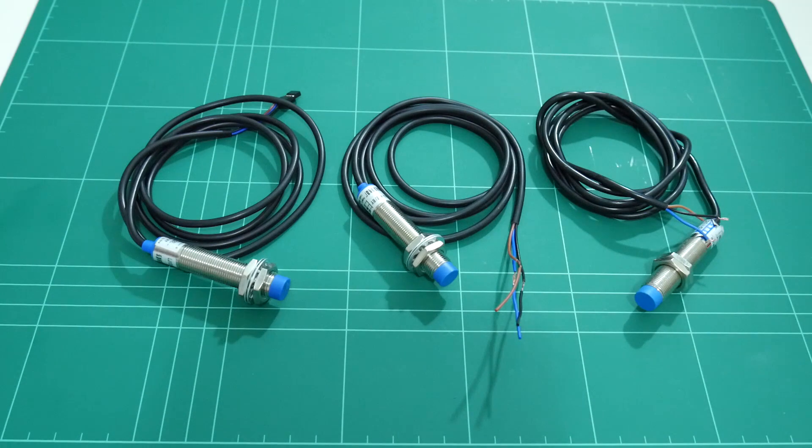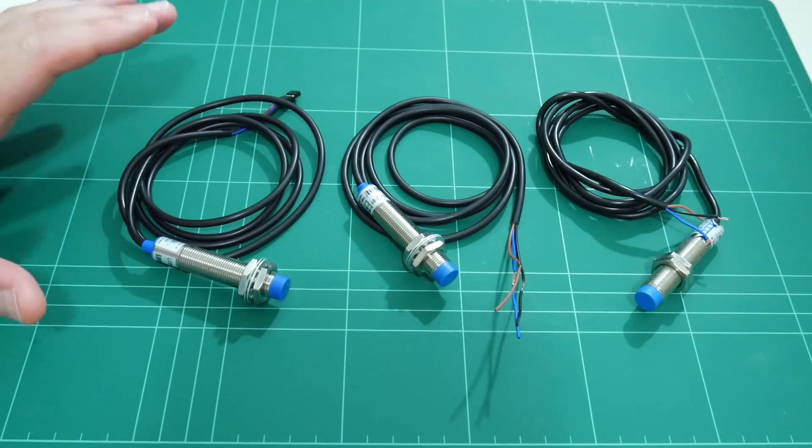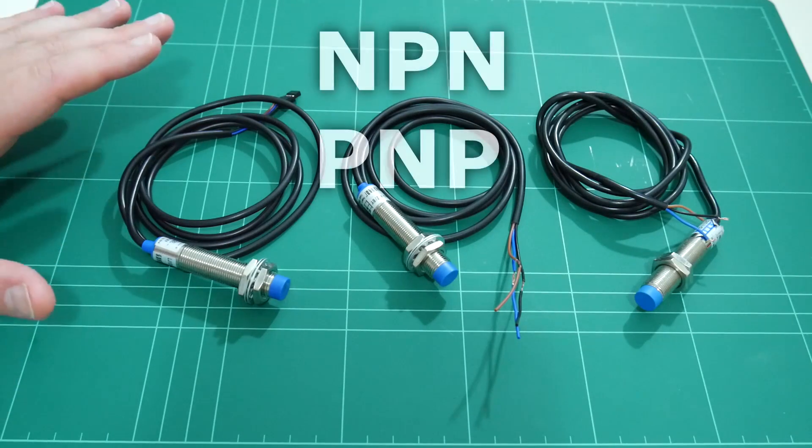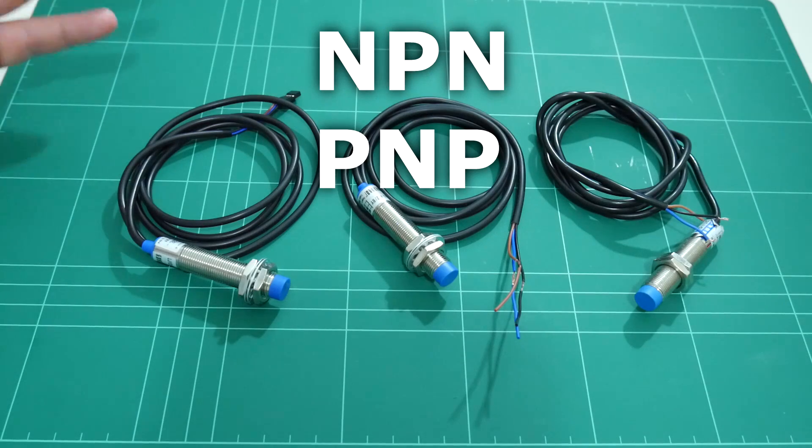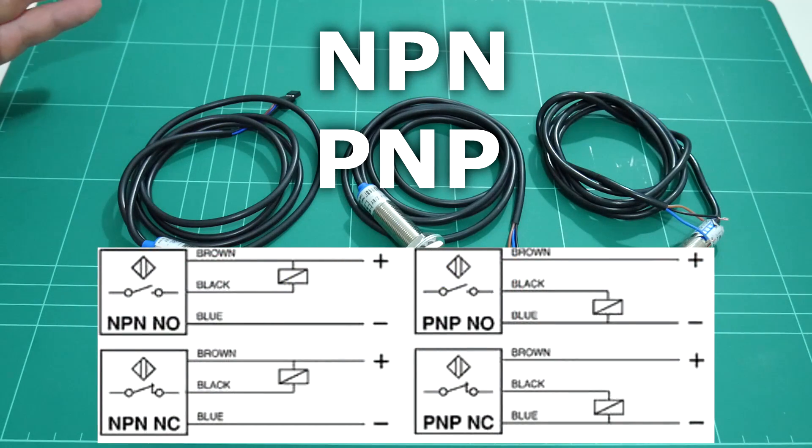When purchasing an inductive sensor for your 3D printer, there are two common types to choose from: NPN and PNP, each type also having either a normally open or normally closed switch output.